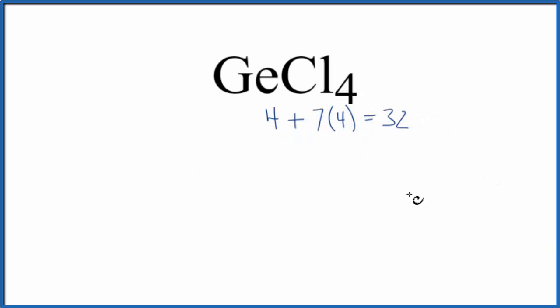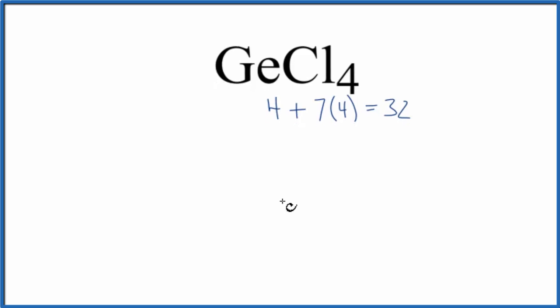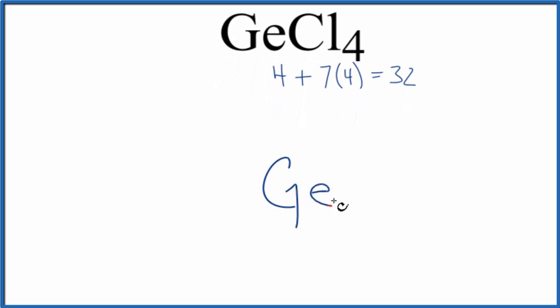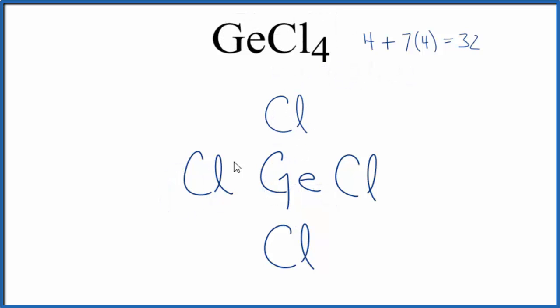We'll put the least electronegative element in the center. That's the Ge, and then we'll put the chlorine atoms around the outside. We'll place electrons between the atoms, and that's going to show the chemical bond. So far, we've used eight.